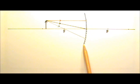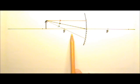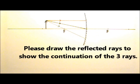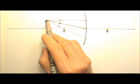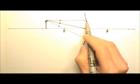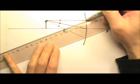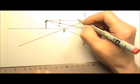Here we have a concave mirror and an object in front of the mirror. Three light rays coming from the tip of the object strike the mirror. Please draw the reflected rays to show the continuation of the three rays. A concave mirror does focus light, so the paraxial ray coming in should get reflected and go through the focal point — like this, through the focal point, this way.